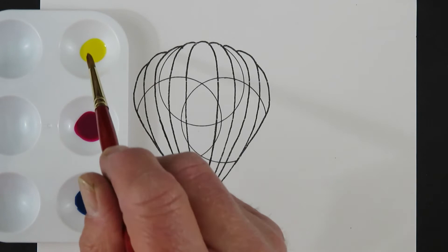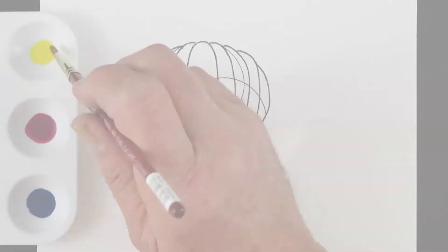Let's begin by putting six drops of process yellow, process magenta, and process cyan into a plastic palette. Start by using a number six round synthetic brush.